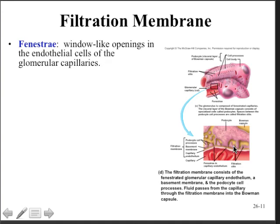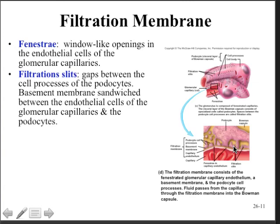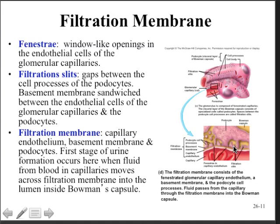Fenestrae are window-like openings in the endothelial cells of the glomerular capillaries, and the filtration slits are the gaps between the processes of the podocytes. The basement membrane sits between the endothelial cells and the podocytes and completes the filtration membrane. The capillary endothelial cells, basement membrane, and podocytes together restrict the types of substances that can enter the filtrate. It's the net filtration pressure — comprising both net osmotic pressure and net hydrostatic pressure on either side of the capillary — that drives substances through the glomerular capillaries into Bowman's.